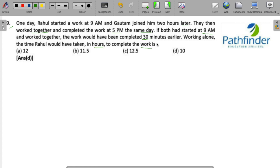in hours to complete the work is. Now this is your question. You're told about two people - you have Rahul, you have Gautam. They are doing some work. We don't know the work, so let us assume that the total